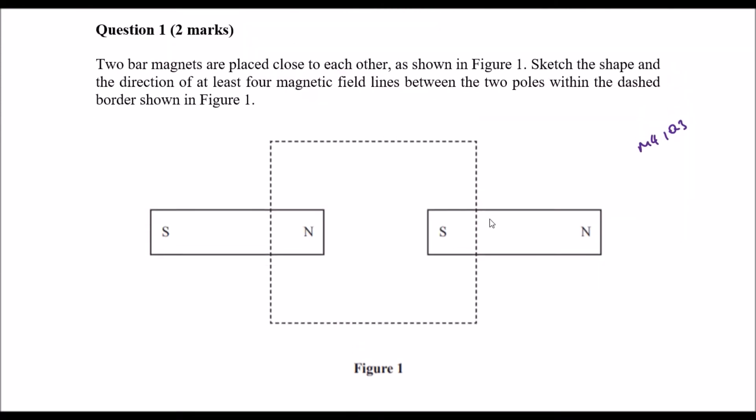So we have North Pole and a South Pole, so we have opposite poles. And what we know is with opposite poles we have attraction.